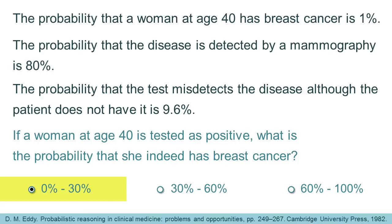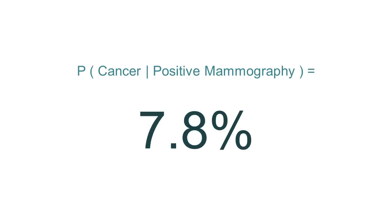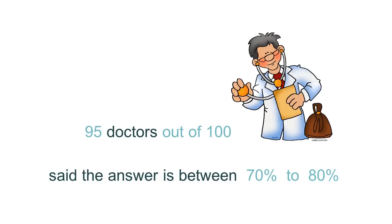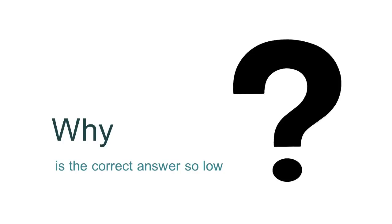The correct one is 0-30%, and this is because the exact answer is approximately 7.8%. Even doctors get this wrong, and in a study, 95% of the doctors said that the answer is between 70-80%. But why is the correct answer so low?